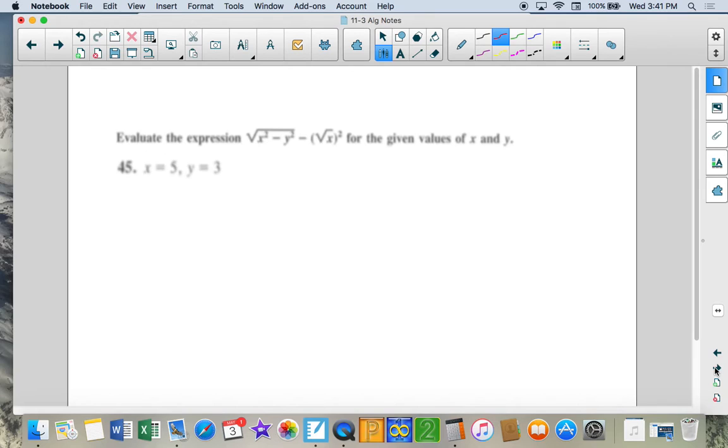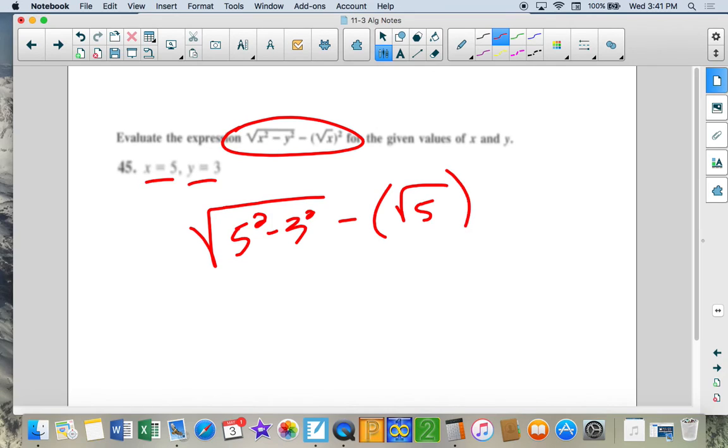The next section, we're going to plug these values into this equation. So, x is 5 squared minus 3 squared, minus the square root of x, which is 5, quantity squared. Well, 5 squared is 25 minus 9, gives me 16 minus.